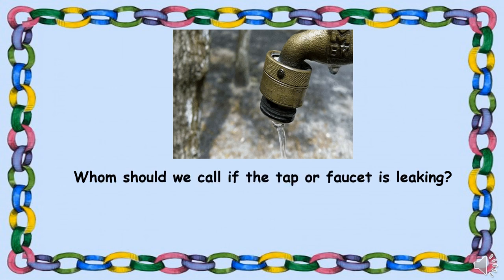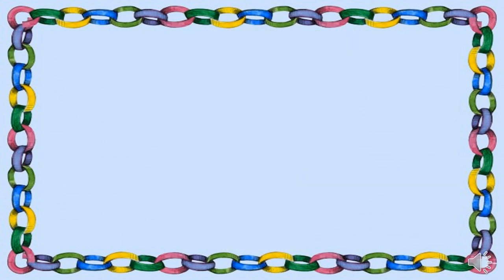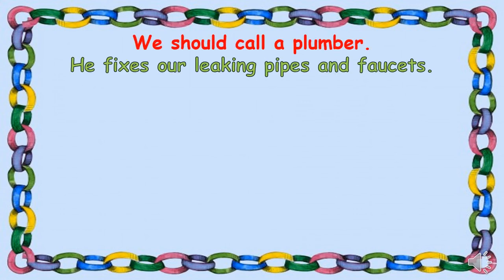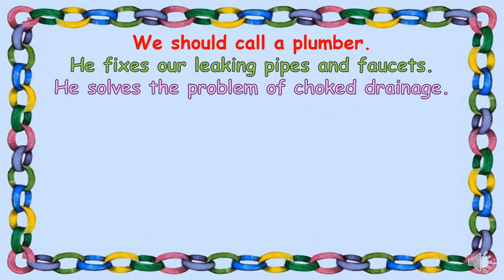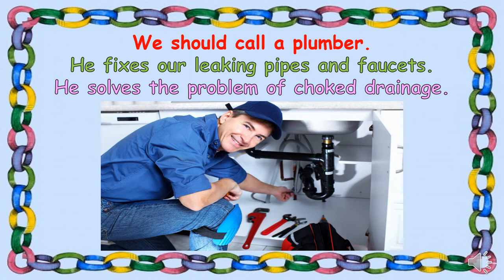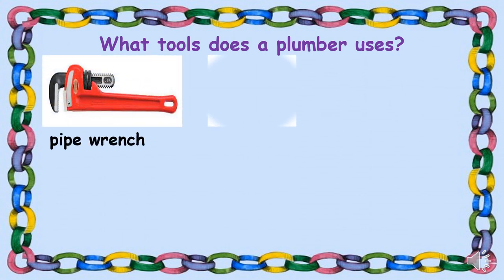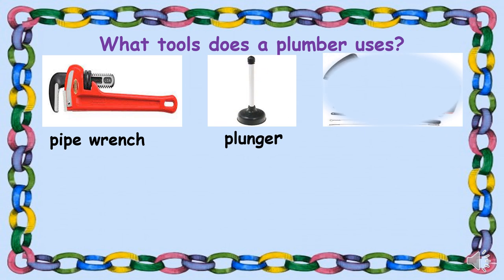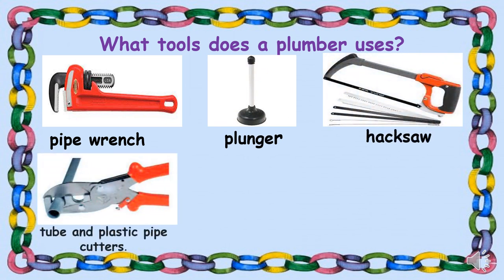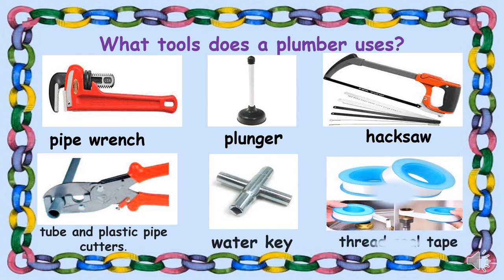If the tap or faucet is leaking, we should call a plumber. He fixes leaking pipes and faucets, and solves the problem of choked drainage. The tools a plumber uses include a pipe wrench, plunger, hacksaw, tube and plastic pipe cutters, water key, and thread seal tape.